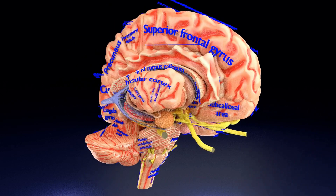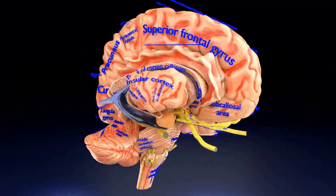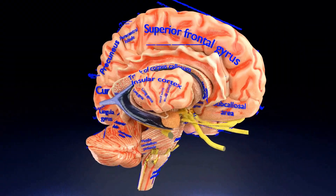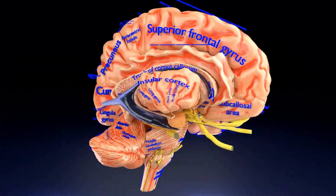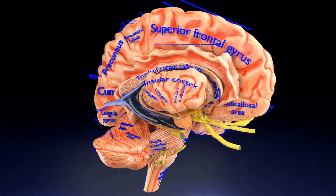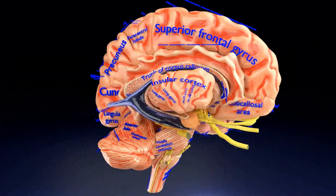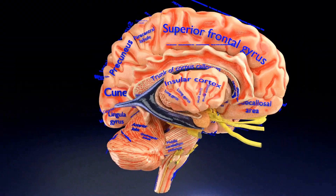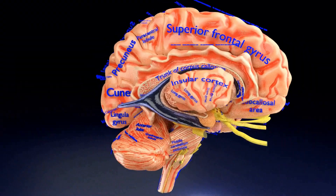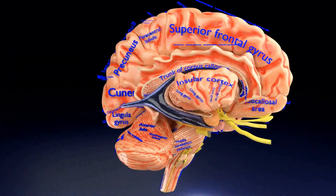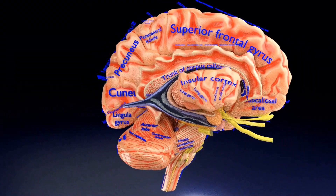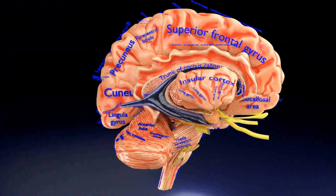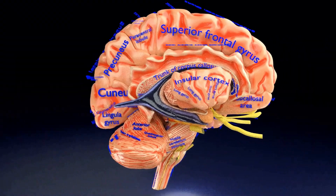On removal of the white matter as well as one of the cerebral hemispheres, you see the medial surface of the opposite side hemisphere. Deeper to this cerebral hemisphere is the corpus callosum, which is formed of association fibres linking the cerebral hemispheres of each side.